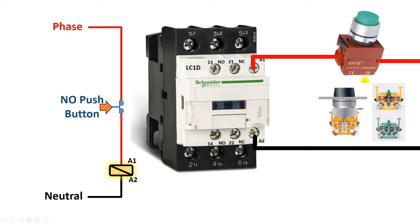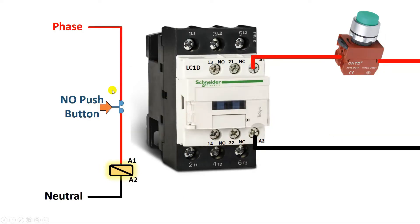Inside this push button there is a spring, so that when we release the push button it will again go to its normal state — NO if it is a NO push button, NC if it is an NC push button. Here we used a NO push button, so after pressing it the circuit is completed. If I release it now, it will again break the circuit, and when the circuit breaks, this contactor will be turned off.